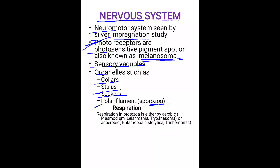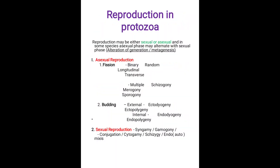These organelles aid in the nervous functions of protozoans. Respiration is either aerobic or anaerobic — aerobic in the case of Plasmodium and Trichomonas, and anaerobic in the case of Entamoeba and Trichomonas species. In the next video we will discuss reproduction in protozoa. Thank you.